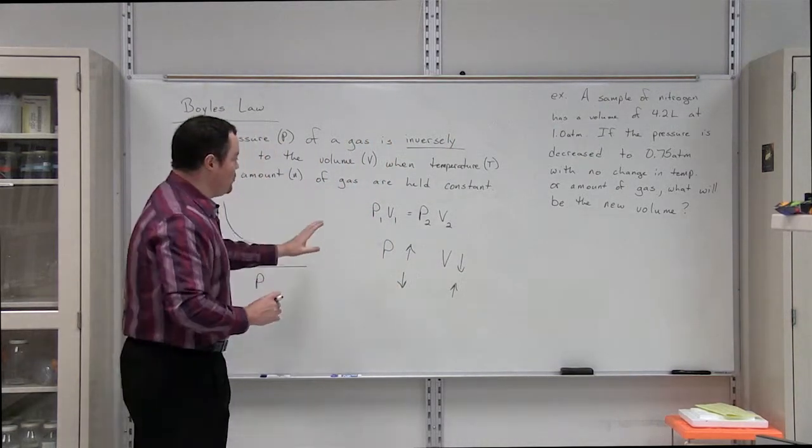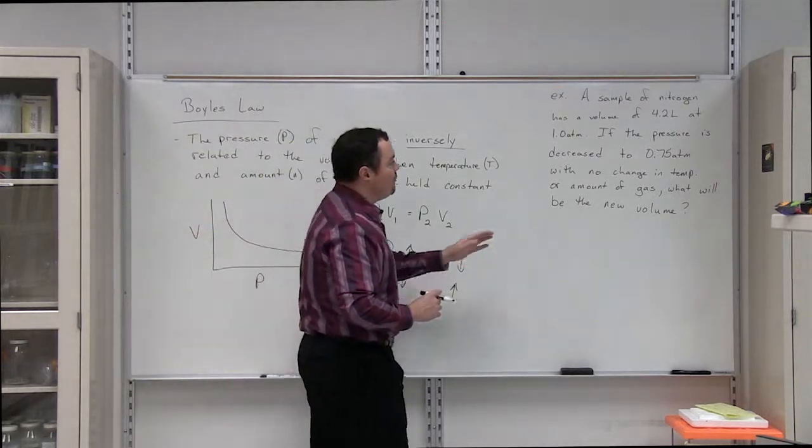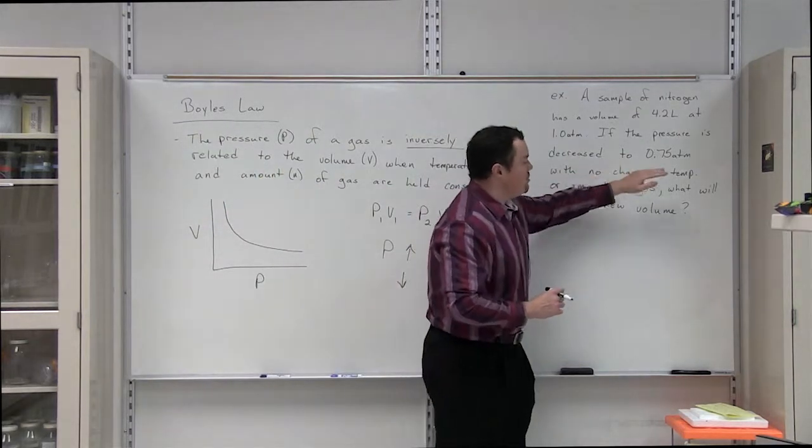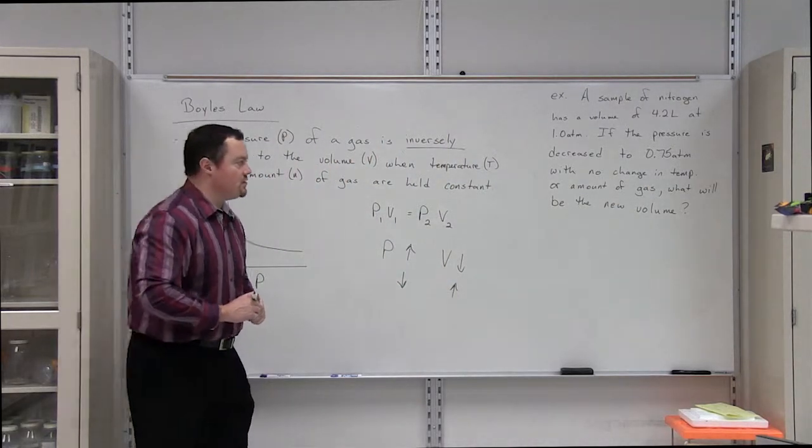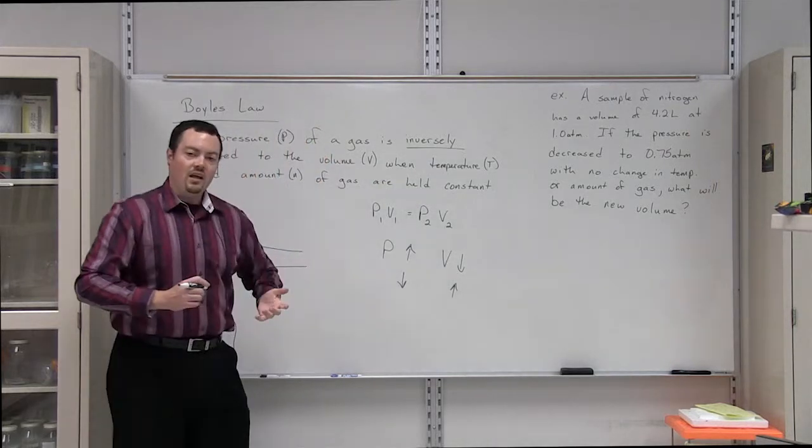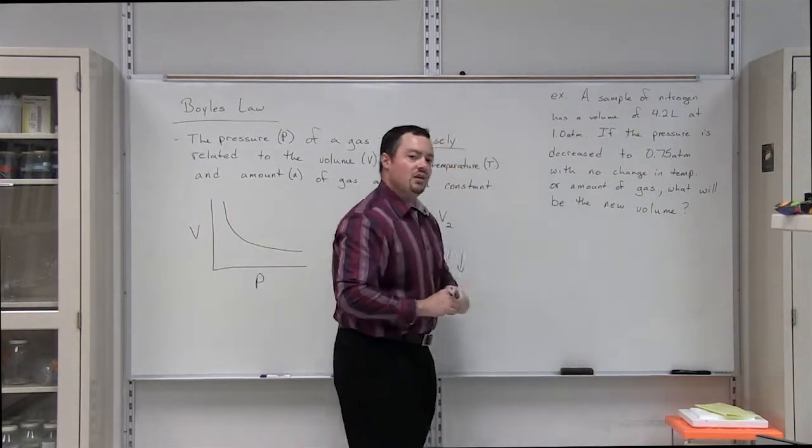Before we solve it, we can use Boyle's Law to predict what we expect to happen. If we decrease the pressure of the gas from one atmosphere to 0.75 atmospheres, then this inverse relationship indicates that the volume of the gas should increase.